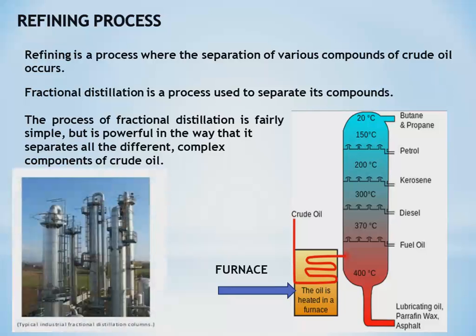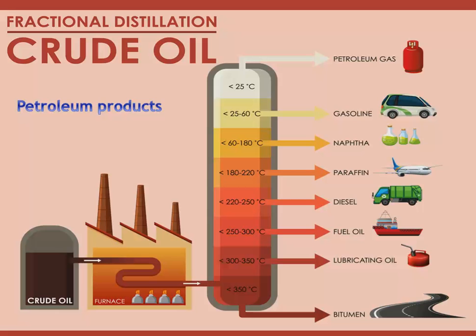The crude oil is heated in a furnace and all the separate compounds of the crude oil are obtained. When crude oil is sent through the furnace, compounds are separated at different temperatures: petroleum gas (LPG) used for cooking and domestic purposes; gasoline (petrol) used in vehicles; naphtha chemicals; paraffin wax; diesel used in heavy vehicles; fuel oil used in ships; and lubricating oil and bitumen used in laying roads.